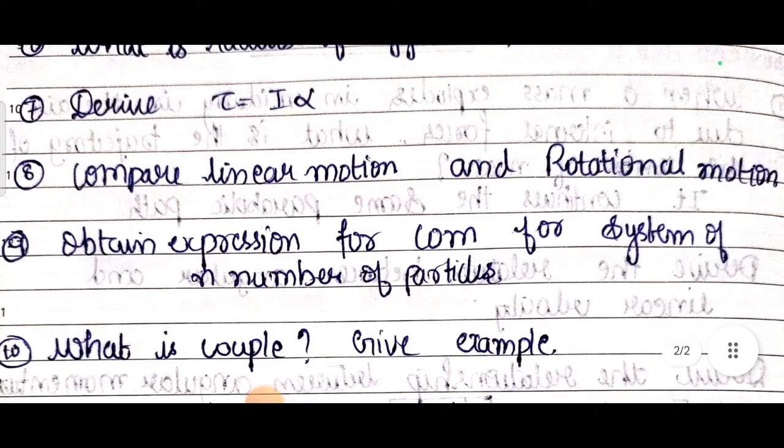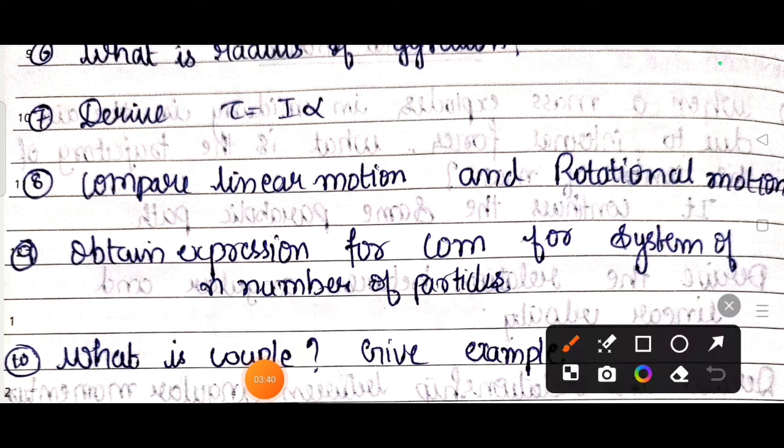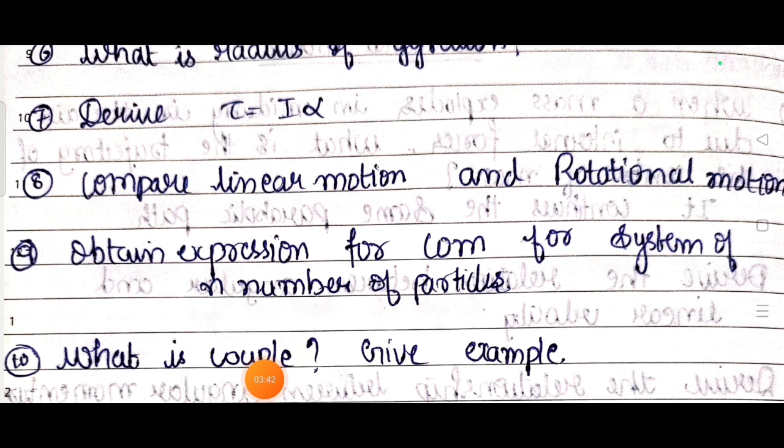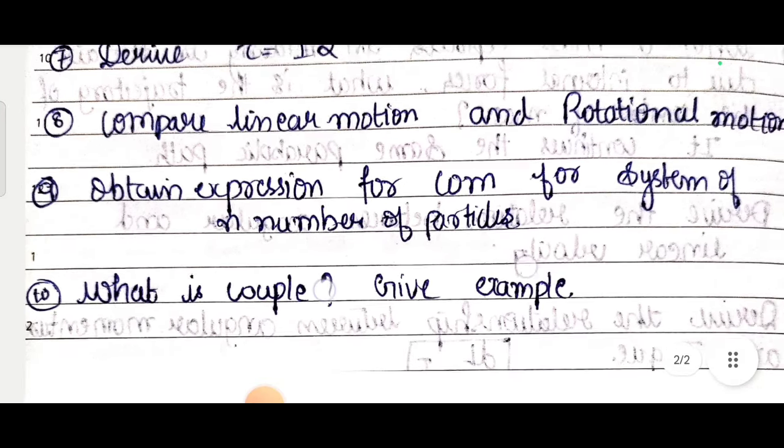Eighth question: compare linear motion and rotational motion. Just compare the equations - like s equals ut plus half at squared, or v squared minus u squared equals 2as. Compare these equations in terms of linear motion as well as rotational motion. This is for 3 marks.